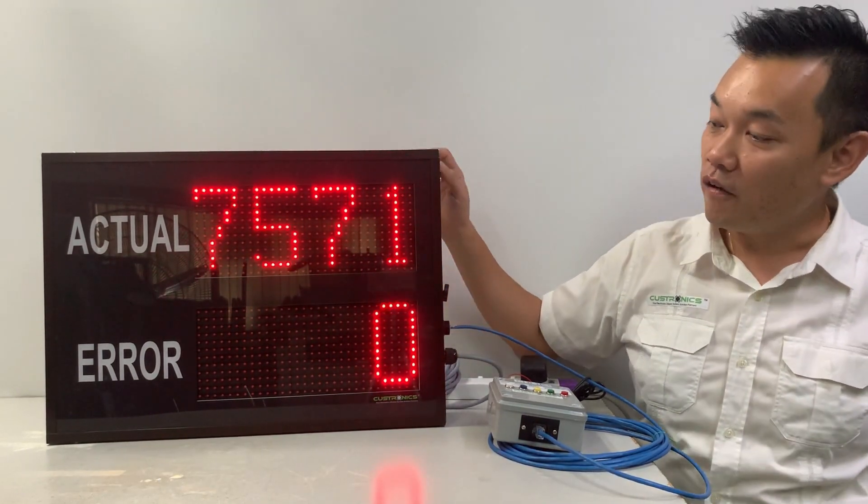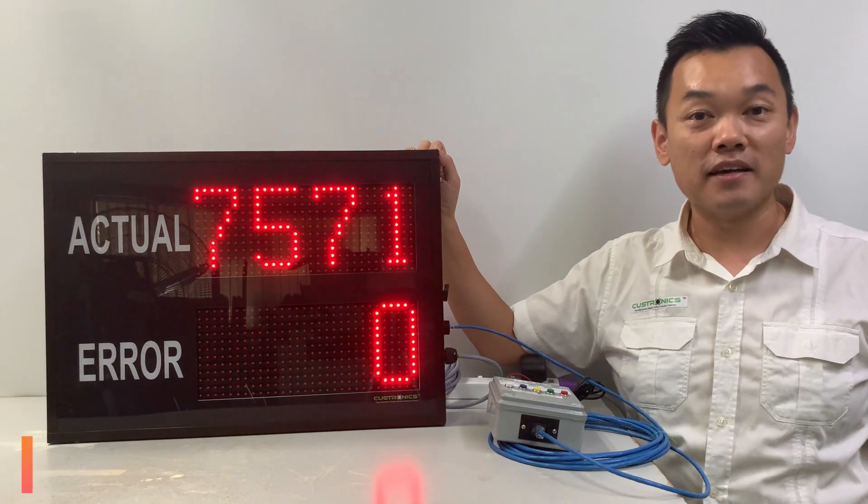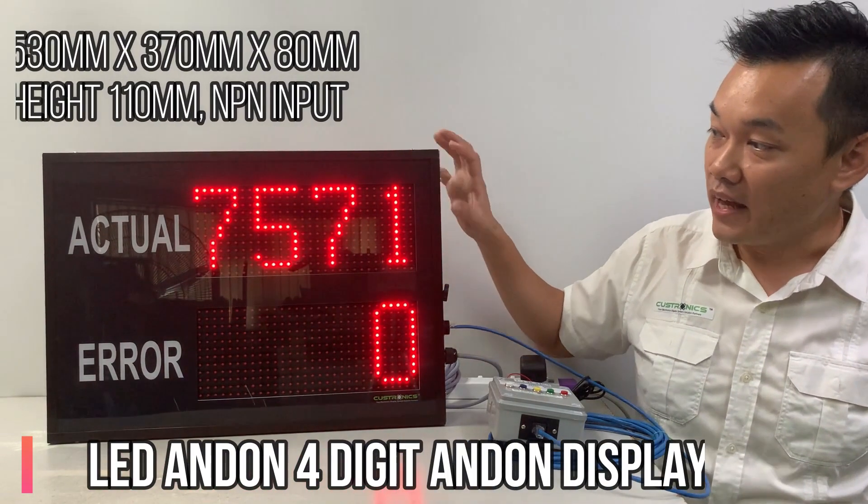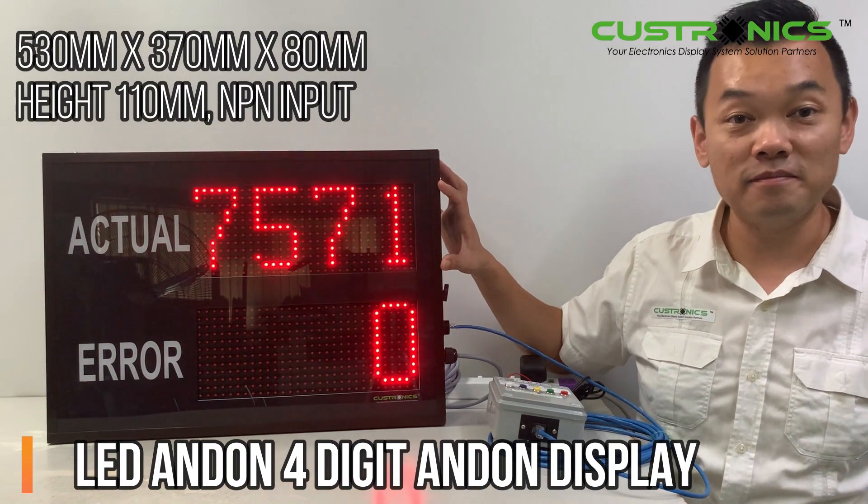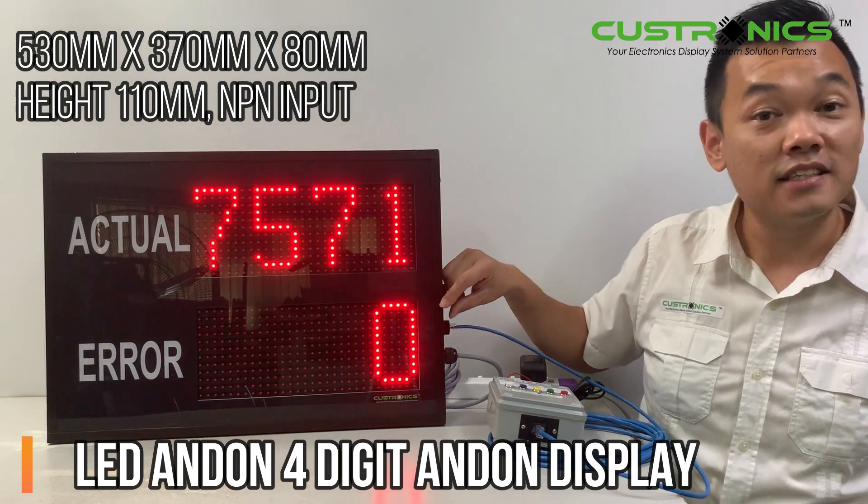In front of us, this is a 4-digit LED Andon Display Panel. As you can see, the actual is 7571 and the error is zero.